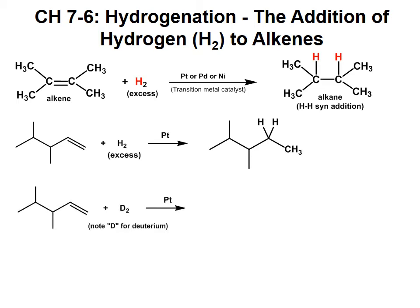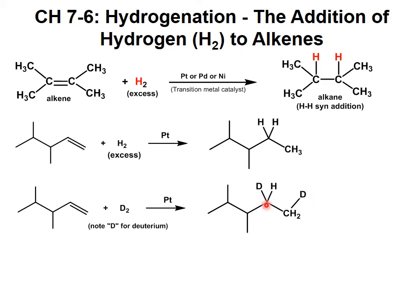A neat thing we can do with hydrogenation is that instead of adding the isotope hydrogen, we can also add the isotope deuterium. In this case, one deuterium atom gets added to this carbon, and another deuterium atom gets added to the other sp2 carbon, giving a product that looks like this. One interesting thing to note is that this carbon is now a chiral center — by changing hydrogen to deuterium, instead of two hydrogens we now have hydrogen and deuterium, generating a chiral center.